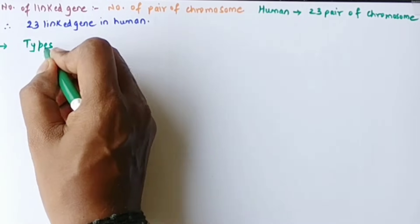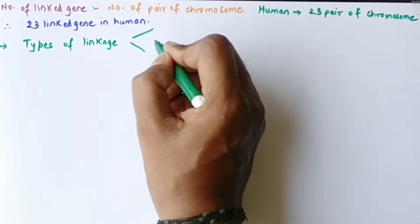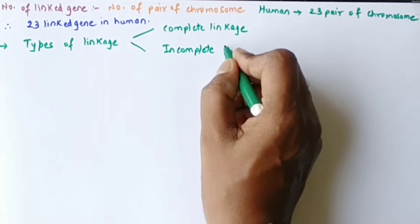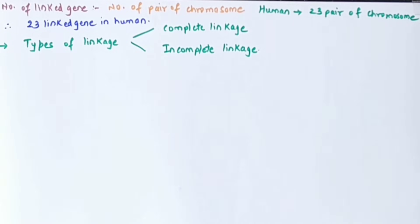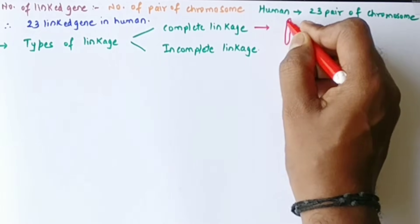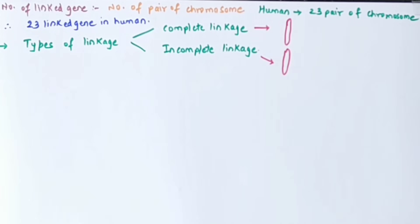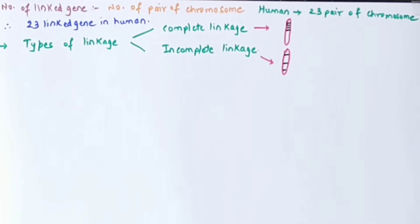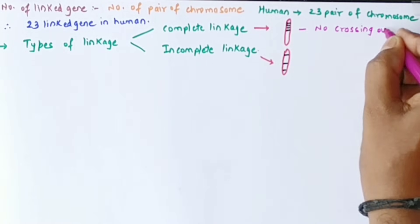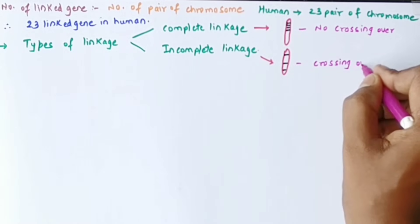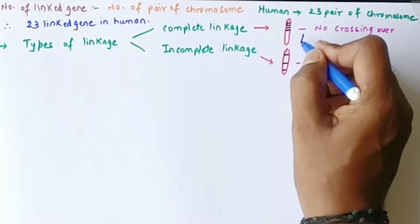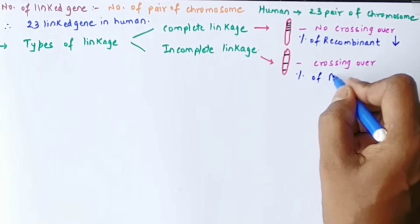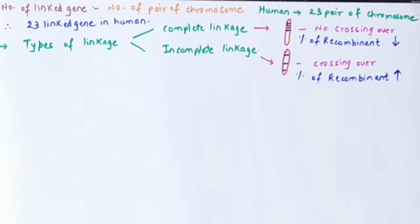Without any crossing over, because they are very close to each other. When we talk about types of linkage, there are two types: complete linkage and incomplete linkage. The chromosome has two areas — one is the homologous region and another is the non-homologous region. Genes in the homologous region are very close and show complete linkage with no chance for crossing over, while genes slightly farther apart show incomplete linkage with some chance for crossing over. The percentage of recombinants in complete linkage is very less, and in incomplete linkage it is very high.